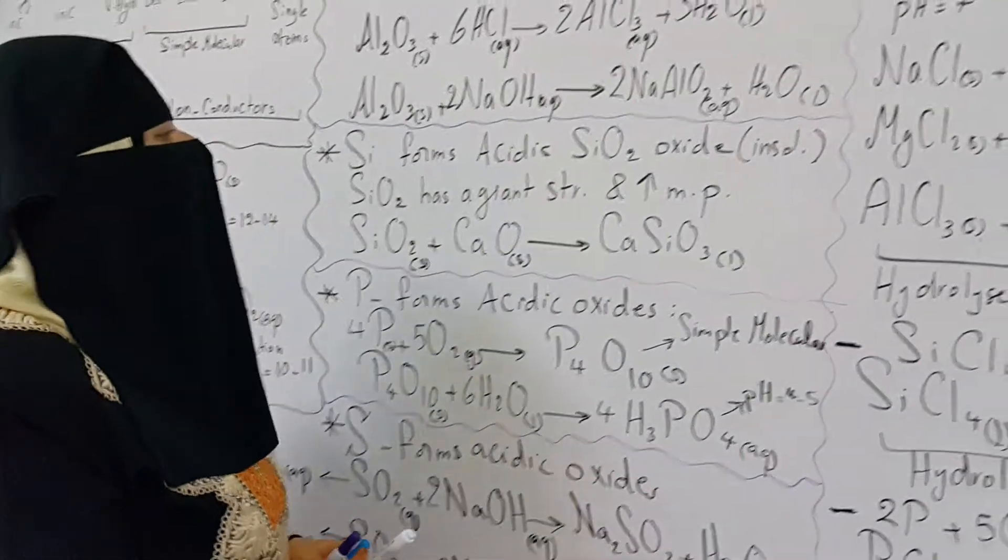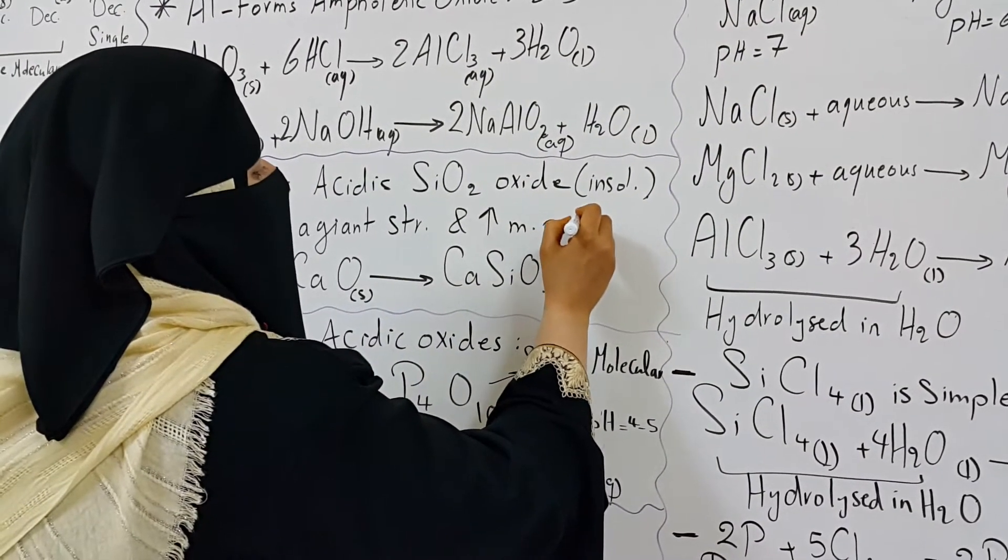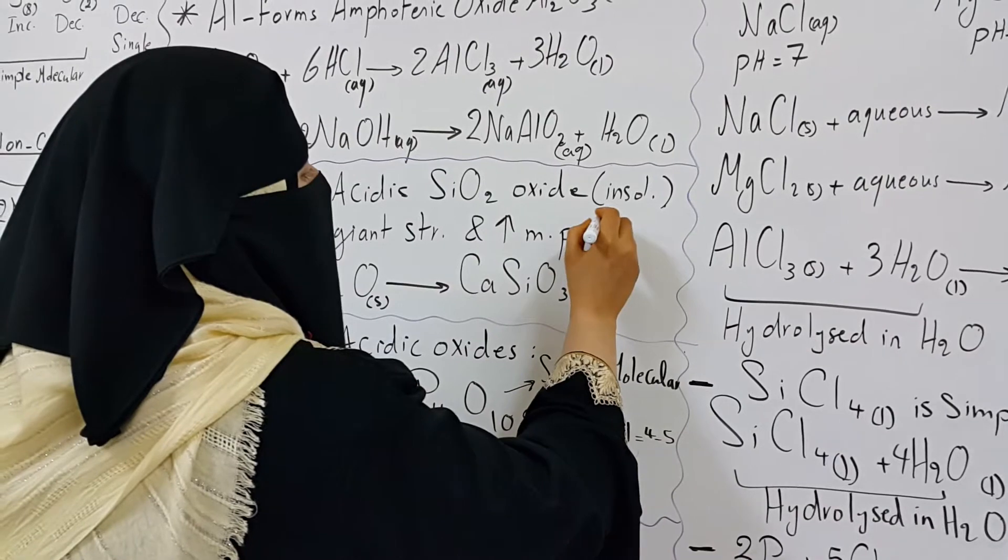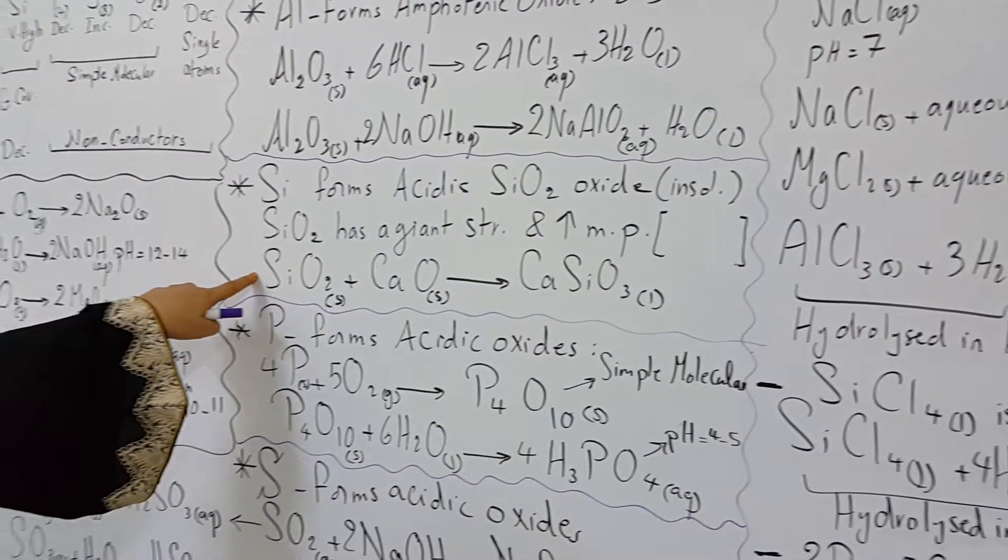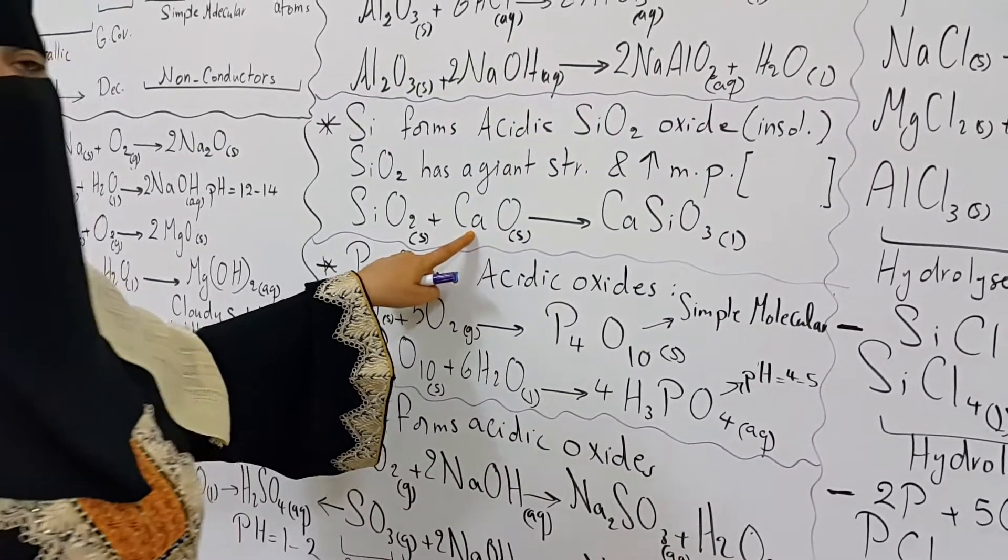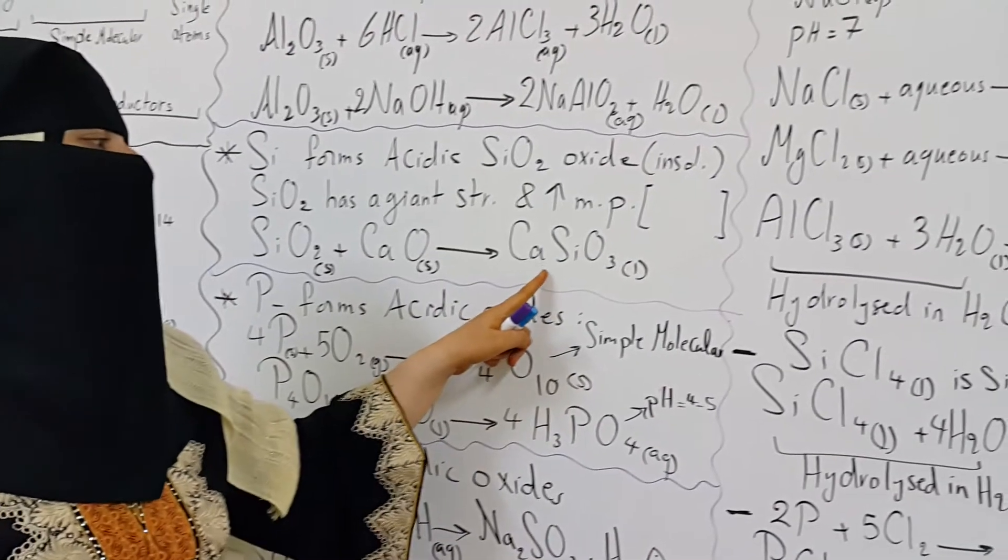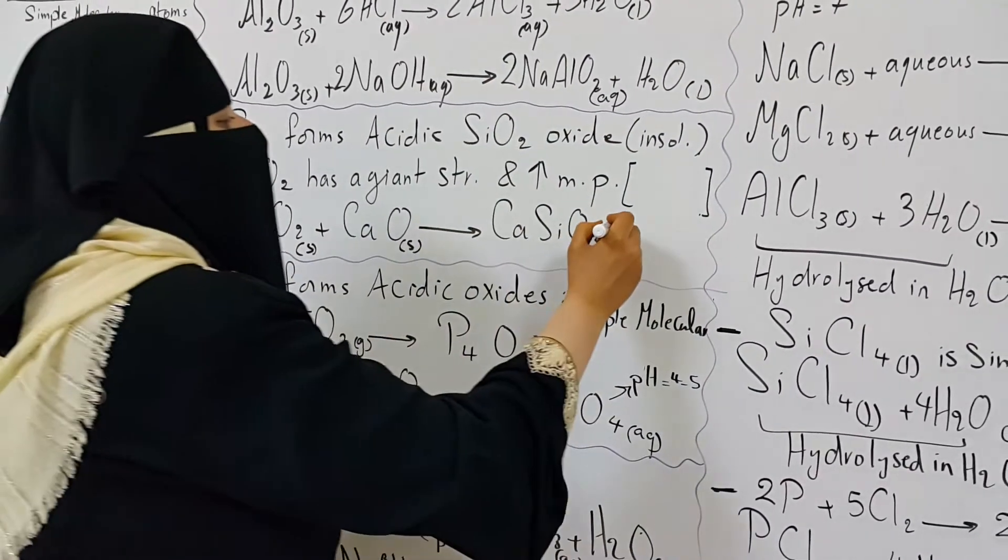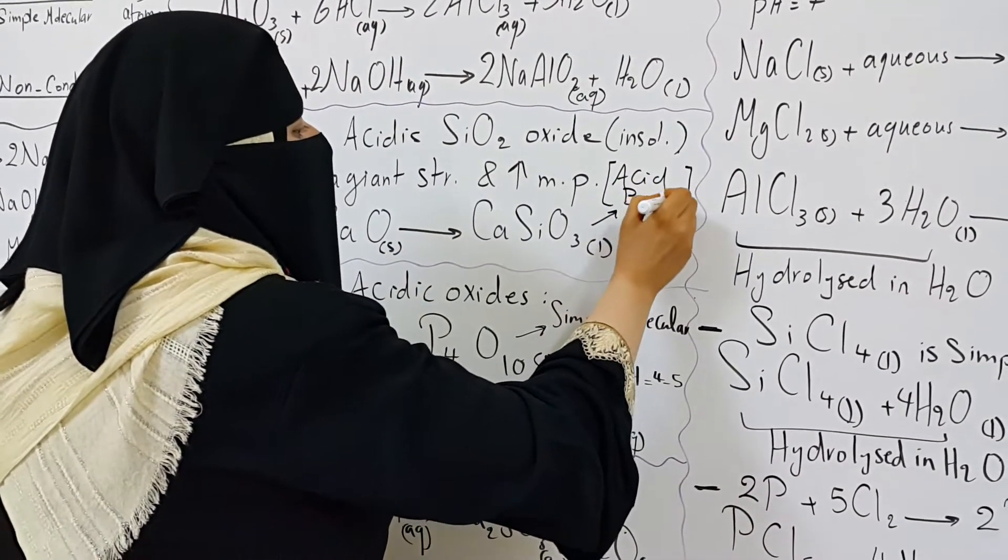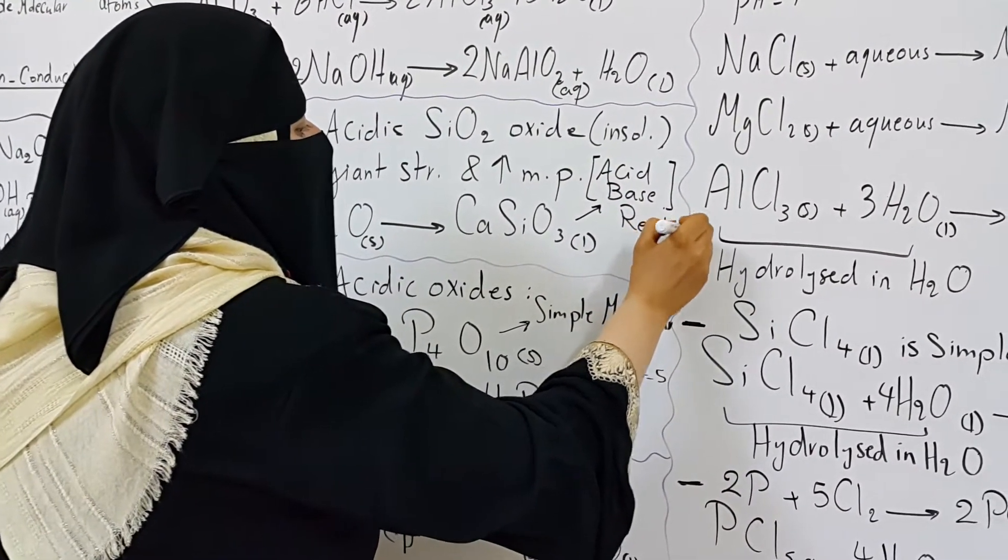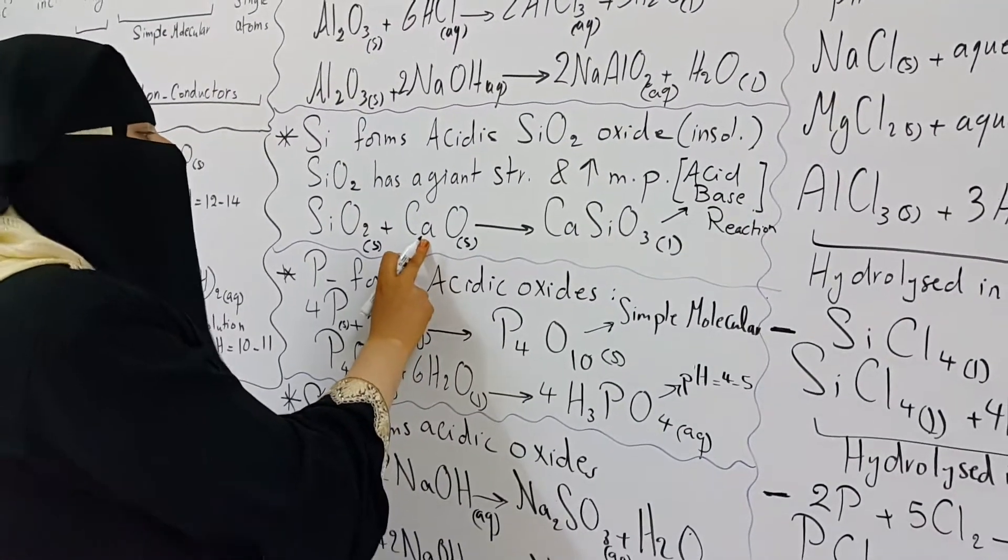That's why we use silicon dioxide in making some materials that resist high temperature. Silicon dioxide reacts with the basic oxide of calcium during the extraction of iron in the blast furnace, forming calcium silicate. This reaction can be considered as an acid-base reaction.